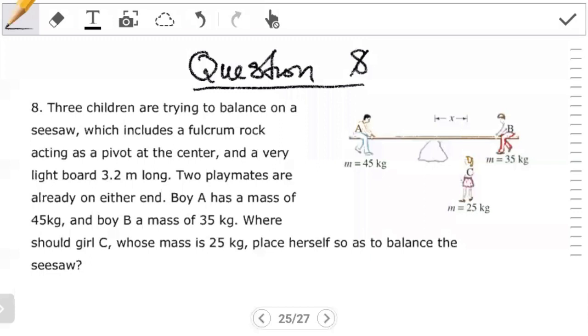Hello students, welcome to another tutorial on particular delivery. In this video, we're going to see how to determine where a third person must sit in order to balance a seesaw where two people are already seated. This is the question I showed you in the previous video. I asked you guys to try it out in readiness for this tutorial.